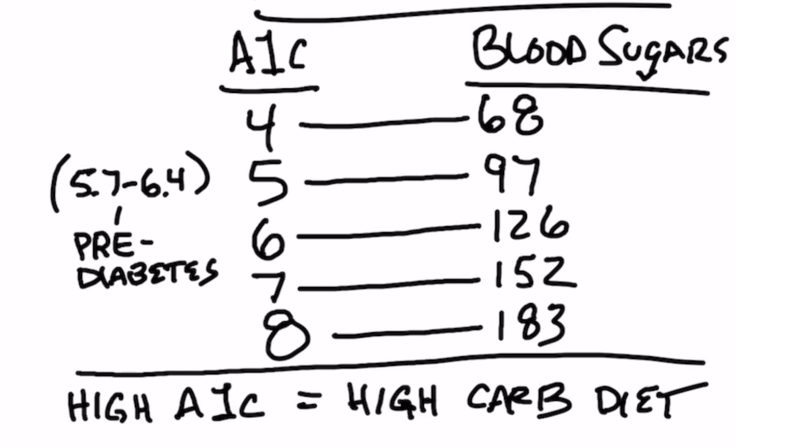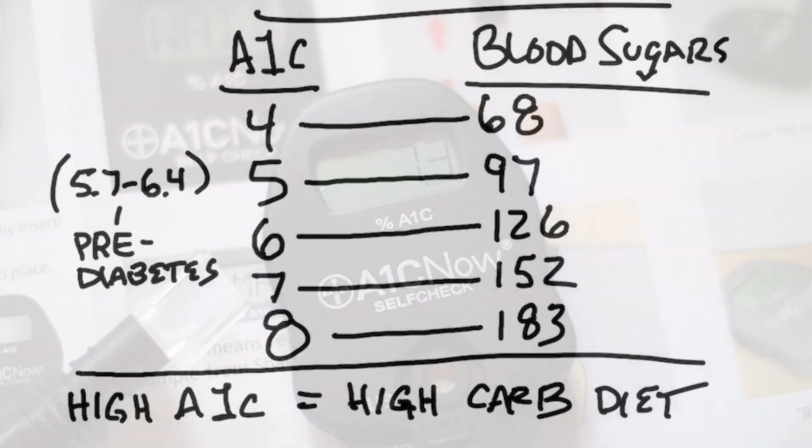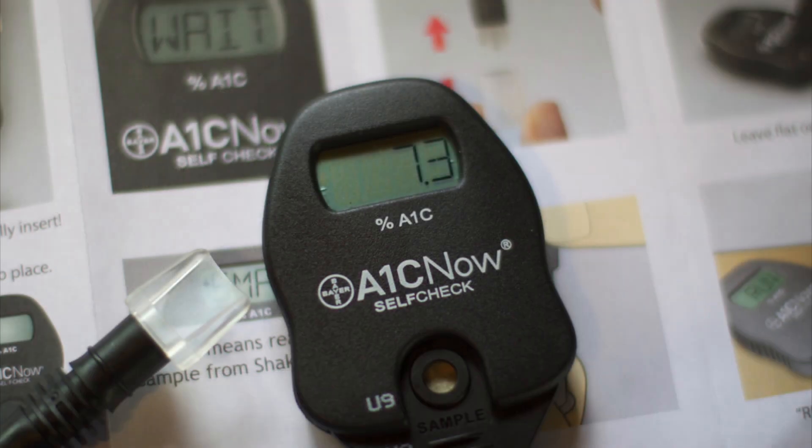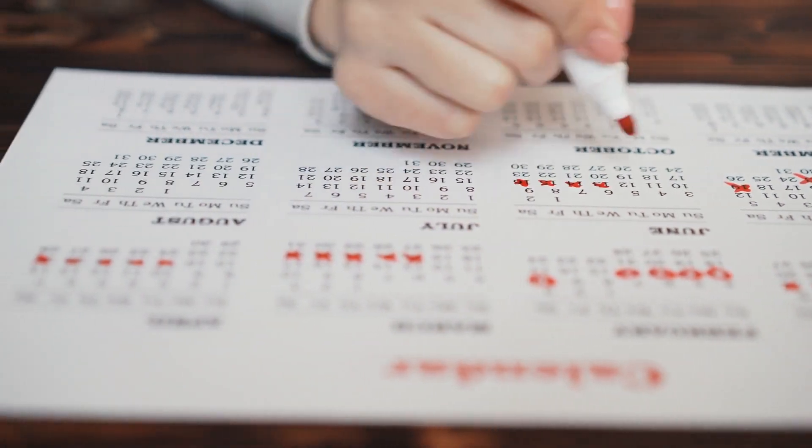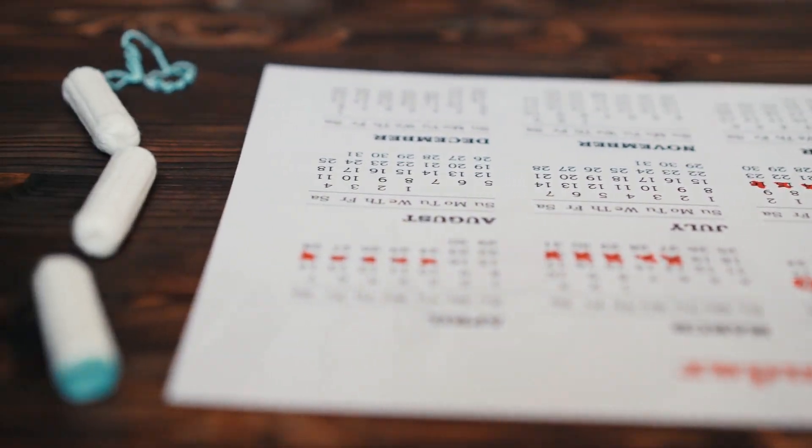A1C is a really good test to tell you what your average blood sugars are. It's much better than a one-time glucose test because it tells you what's happening over a period of time. So if you're doing really good through the week, yet on the weekends you go off your plan and eat a lot of sugar, you're not going to probably have good A1C. High A1C really is a high carbohydrate diet.